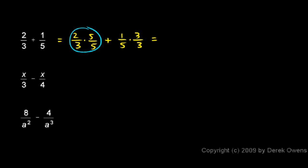So this first fraction, I've got 2 times 5, which is 10, over 3 times 5, which is 15, plus the second fraction. In the numerator, I have 1 times 3, which is 3, and in the denominator, I have 5 times 3, which is 15.